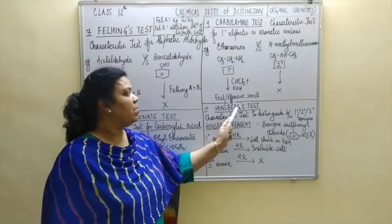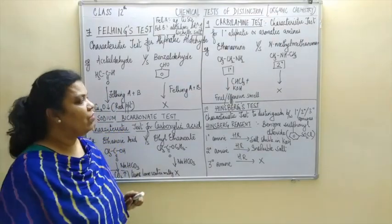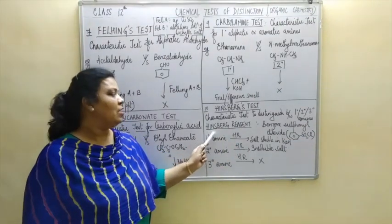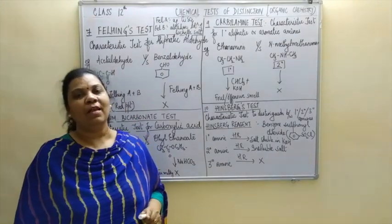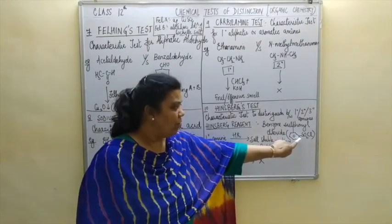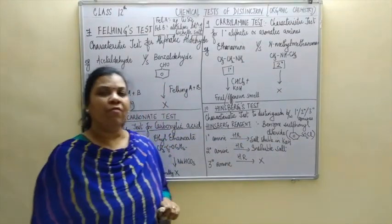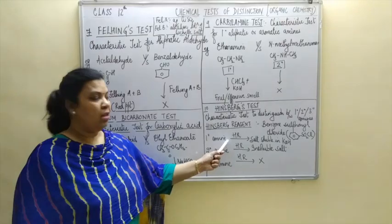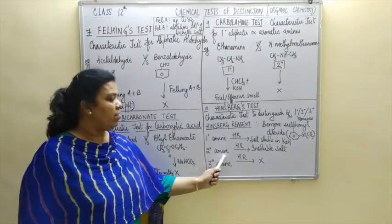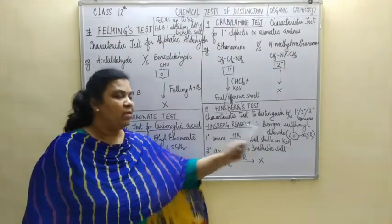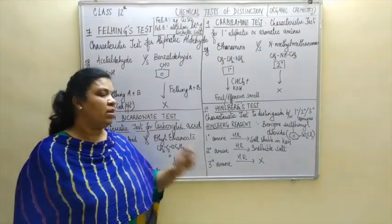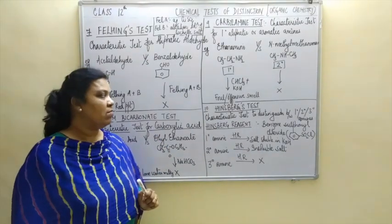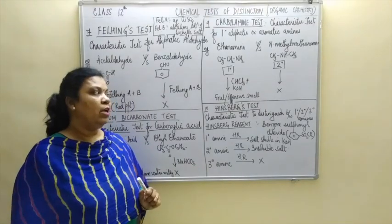The next test is the Hinsberg test. Hinsberg test is the characteristic test to distinguish between primary, secondary, and tertiary amines. Hinsberg test involves Hinsberg reagent, which is benzene sulfonyl chloride — structure C6H5SO2Cl. On addition of Hinsberg reagent to a primary amine, you will get a salt soluble in KOH. On addition to a secondary amine, you will get an insoluble salt. Whereas on addition of Hinsberg reagent to a tertiary amine, you will not get any observation. So the Hinsberg test distinguishes between primary, secondary, and tertiary amines.